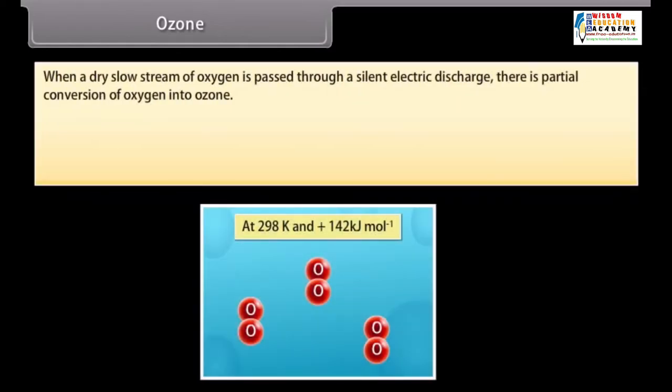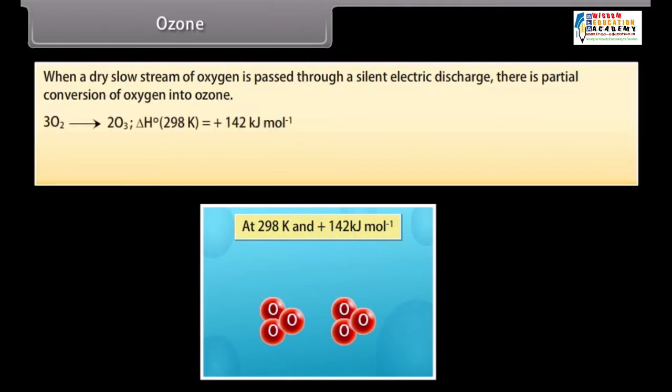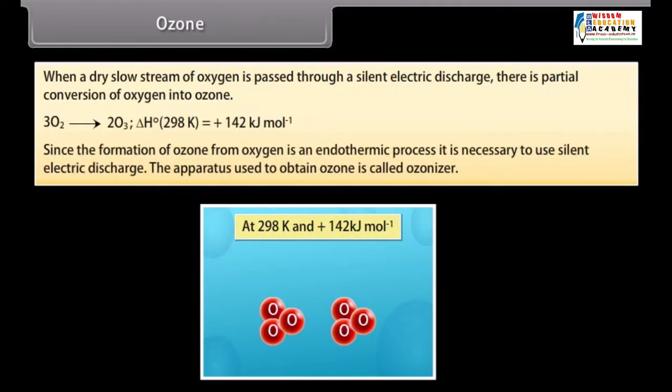When a dry, slow stream of oxygen is passed through a silent electric discharge, there is partial conversion of oxygen into ozone. Since the formation of ozone from oxygen is an endothermic process, it is necessary to use silent electric discharge.